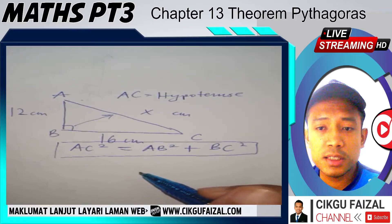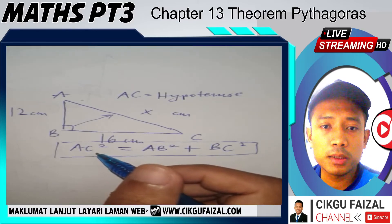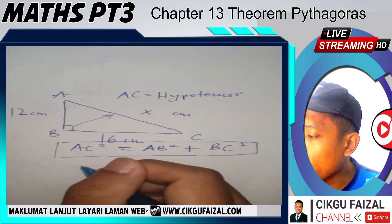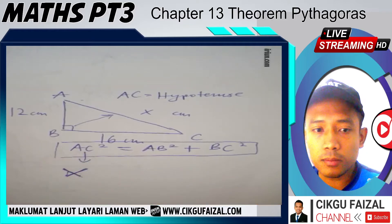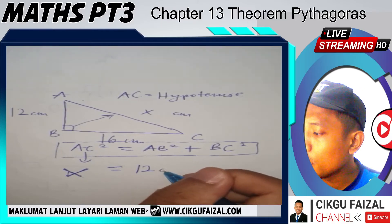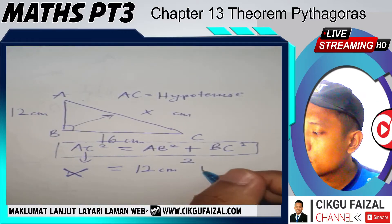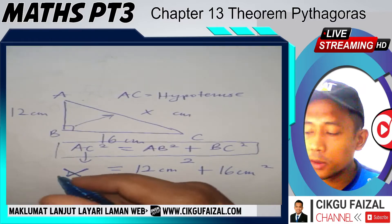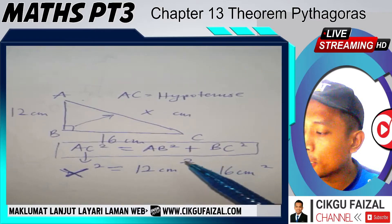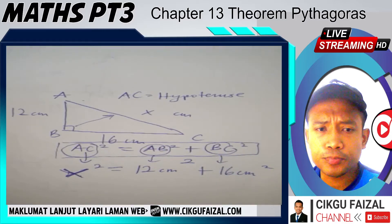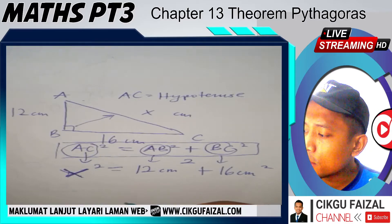So, in this case, you just substitute the values that you know. AC squared — which is the hypotenuse — we don't know, so we put X squared. X squared is equal to AB squared plus BC squared. The value for AB is 12 cm, so 12 squared; and BC is 16 cm, so plus 16 squared. Don't forget the square. We are just following the formula and substituting the values.